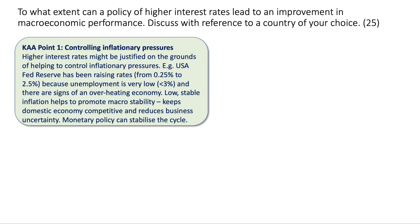My first point is that higher interest rates can be justified in terms of controlling inflation. Higher monetary policy interest rates and monetary tightening might be justified on the grounds of helping to limit inflationary pressure, both demand-pull and cost-push. A good example is the United States Federal Reserve, which has been increasing interest rates — raising them four times this year from 0.25% to 2.5% — partly because unemployment in the labor market is very low and there are signs of an overheating economy. Raising interest rates helps promote macro stability, keeps the domestic economy competitive, limits the size of any positive output gap, and low stable inflation keeps business uncertainty to a minimum.